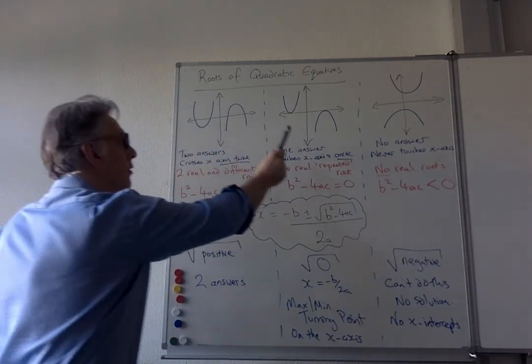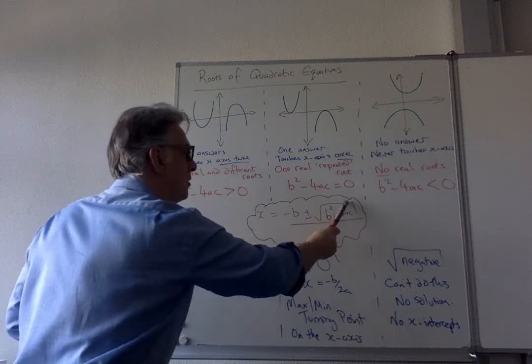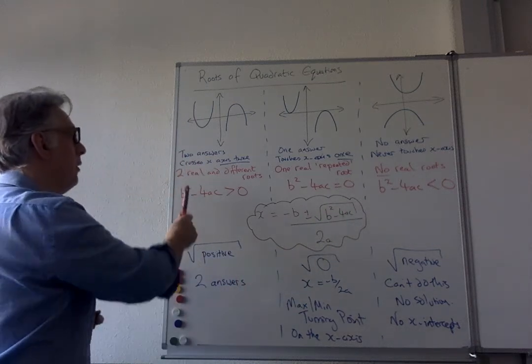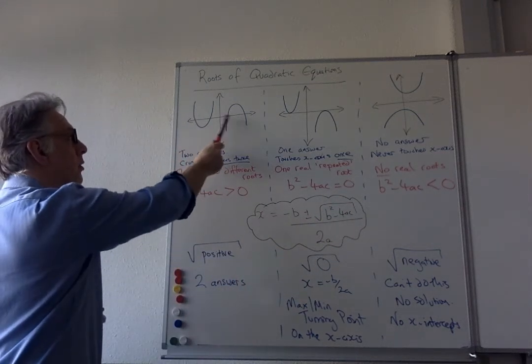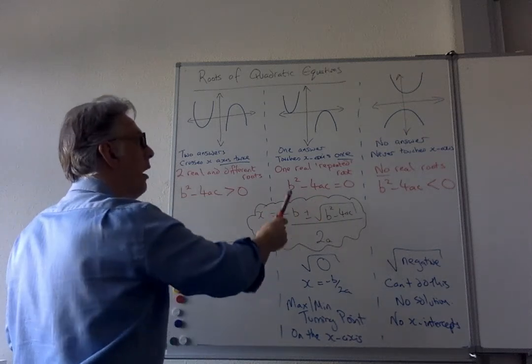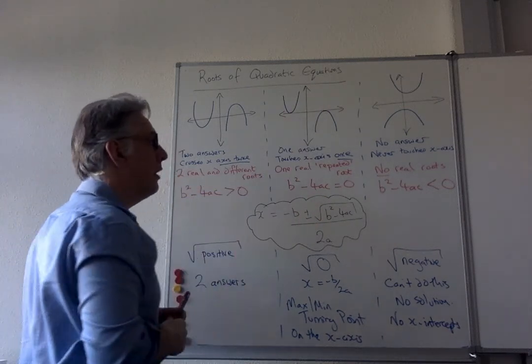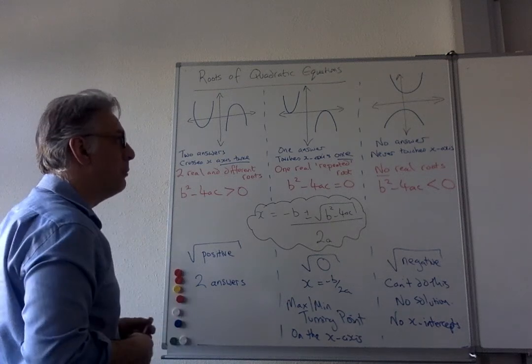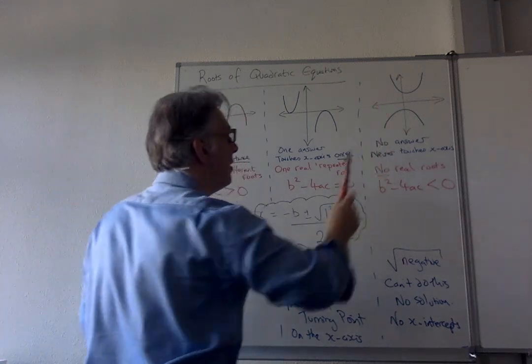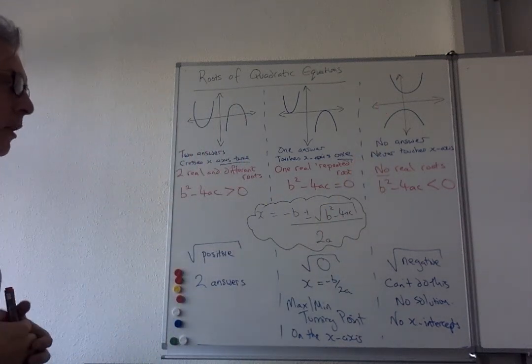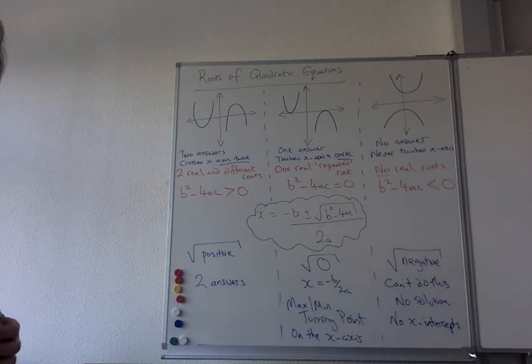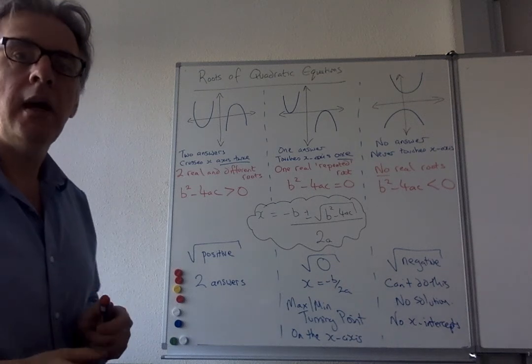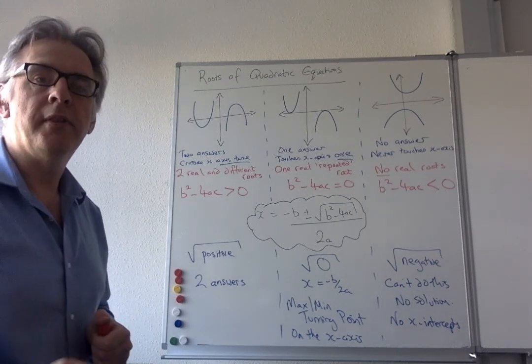So in fact, if you want to know which of these three situations you've got, you can just test this part of the equation and know that you've got two real and different roots. It crosses twice. That this equals zero, and it's only going to touch the x-axis once, and it's going to be the maximum or the minimum turning point. And this one, you know, it's not going to touch the x-axis. So you don't even have to look for the x-intercepts. So write those notes down, and then I'm going to do two examples using that idea.